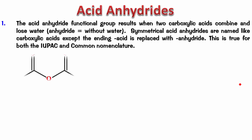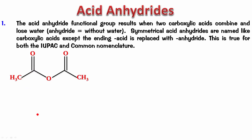Try naming this molecule — pause the video, name it, then play back to check the answer. There are two carbons in this part, and using carboxylic acid naming (alka-noic acid), two carbons gives 'ethanoic'. Since the anhydride is symmetrical, you don't write ethanoic twice — you simply say ethanoic anhydride.